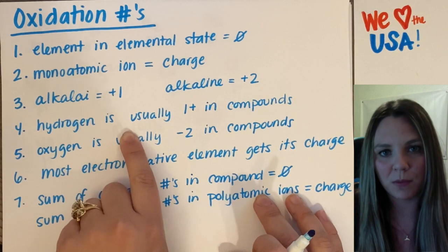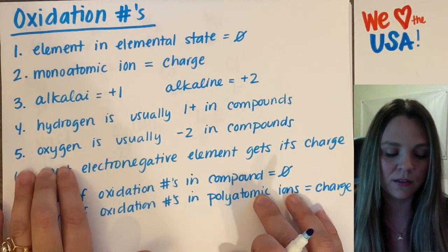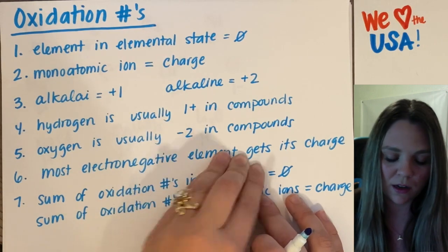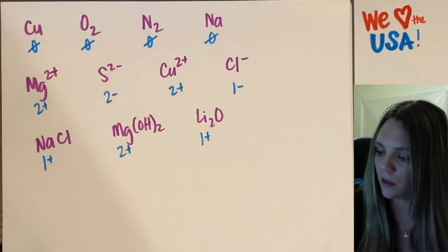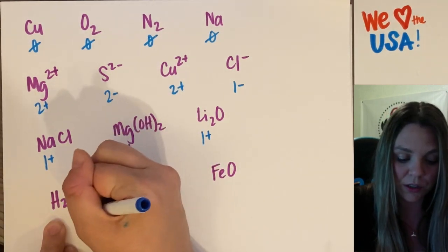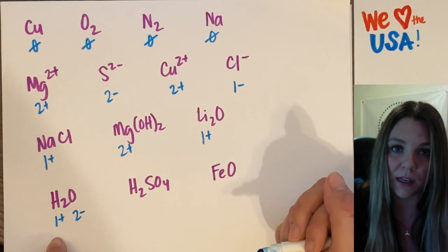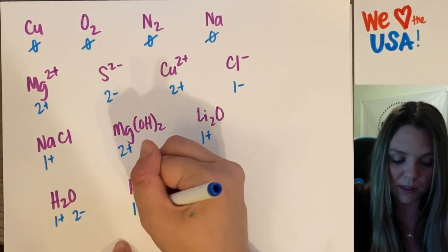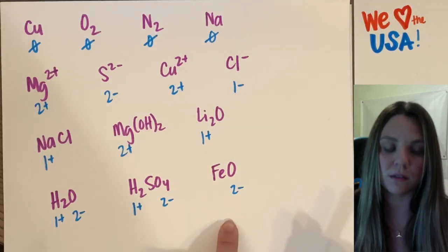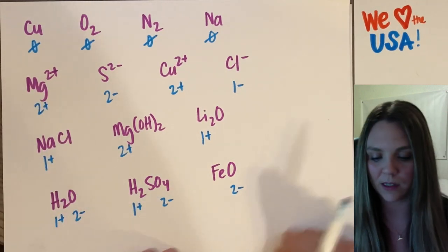Hydrogen is usually one plus in any kind of compound, and oxygen is usually two minus in compounds — we'll combine those rules. In a compound, oxygen should get a two minus and hydrogen should have a one plus. You would assign hydrogen a one plus and oxygen gets the two minus.